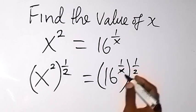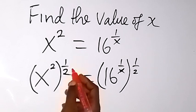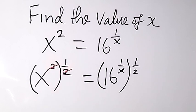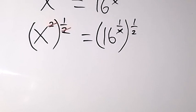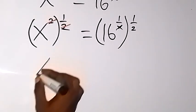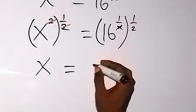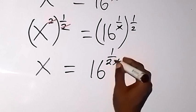When we apply this, we discover that the powers multiply each other. Therefore, these two on this side cancel each other, and what we have left is only x. So we have only x left here, which equals 16 raised to power 1 over 2x.